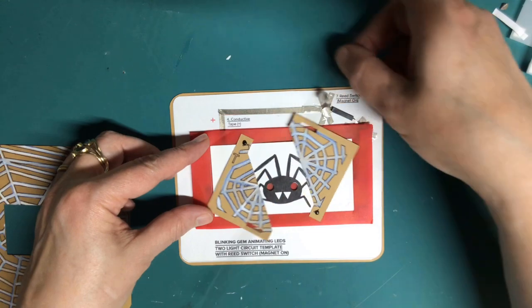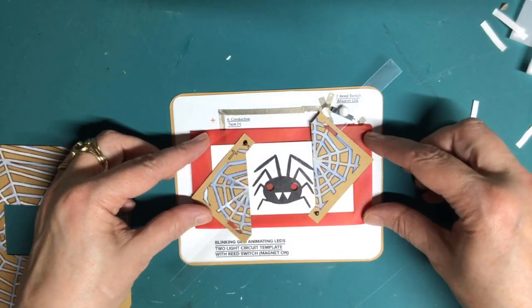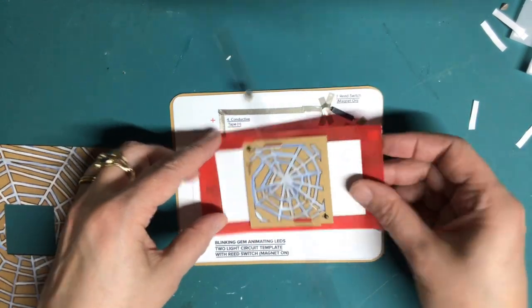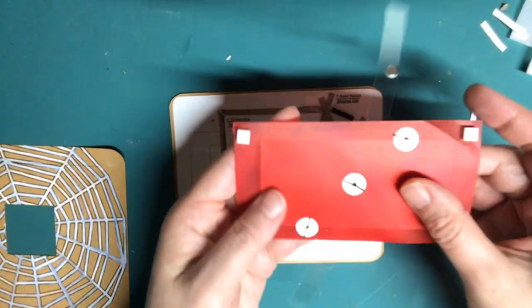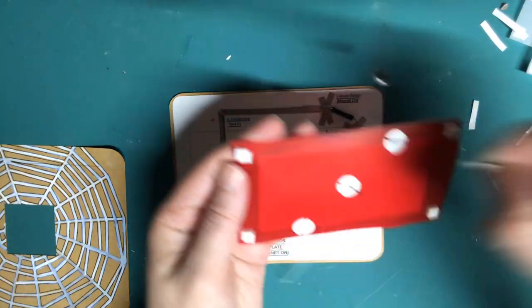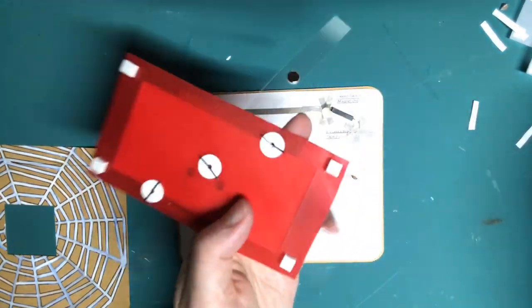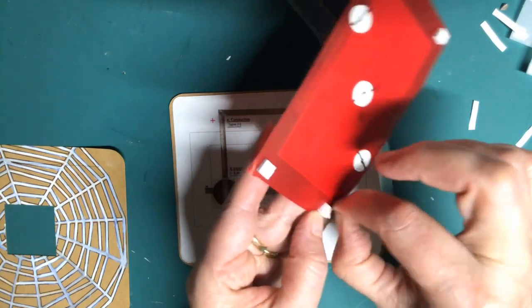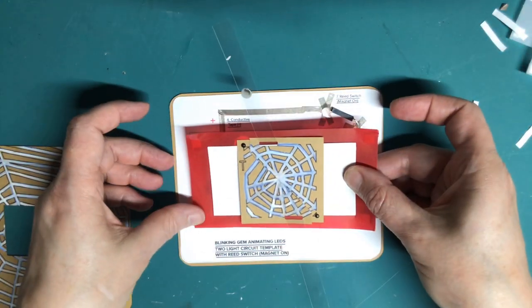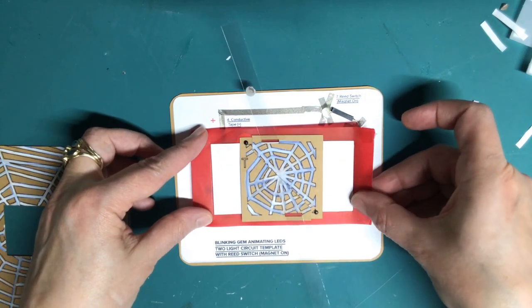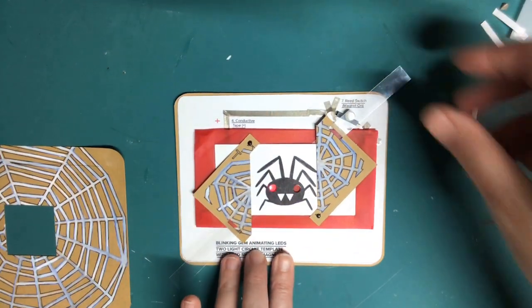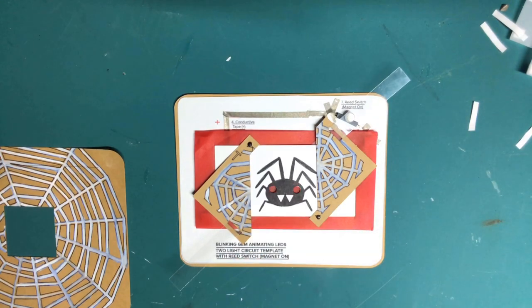Test the magnetic lever to ensure that it works as expected, then remove the protective backing from the foam squares on the back side. Then carefully position the door mechanism in the outline on top of the circuit diagram, and make sure that the holes for the spider eyes match up with the LEDs.